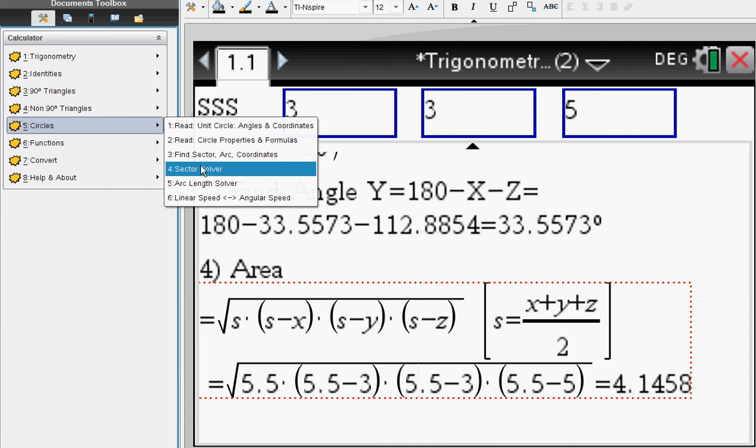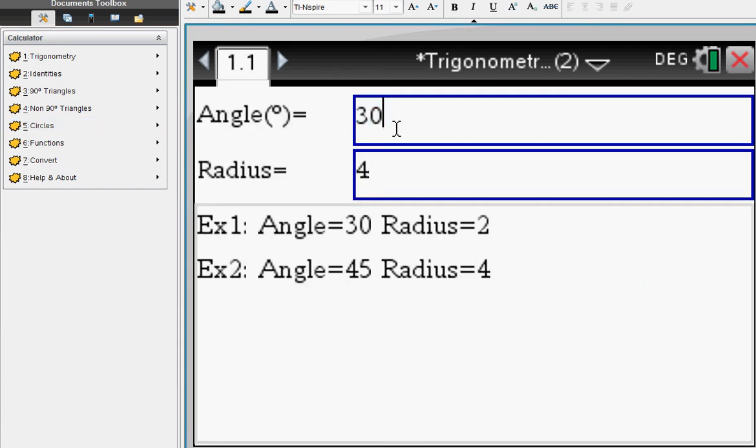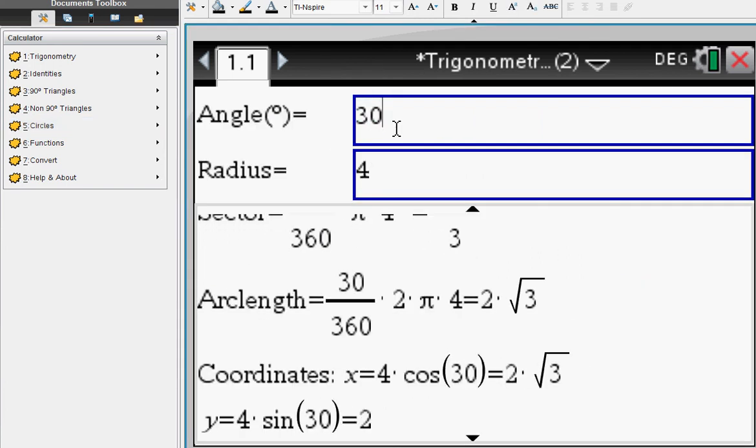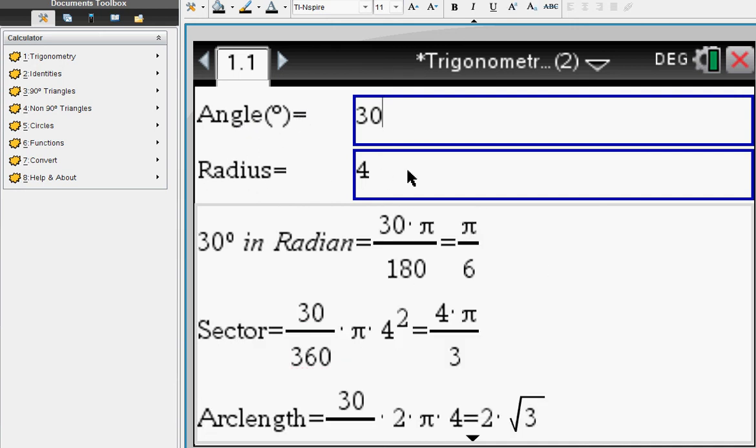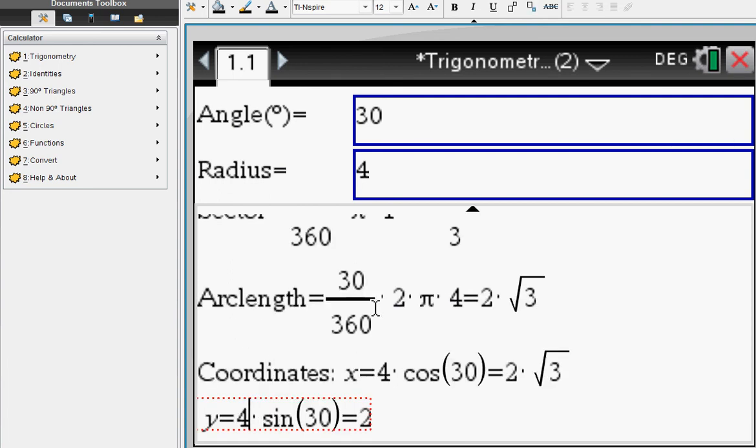For circles, if you'd like to find out information about a circle, you enter the angle and the radius. What you get is, first of all, the angle also in radians converted for you. You get the sector area, the arc length of this piece of the circle, and you get the coordinates that correspond to this angle and this radius.